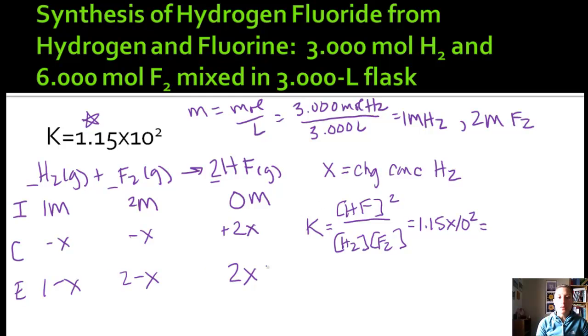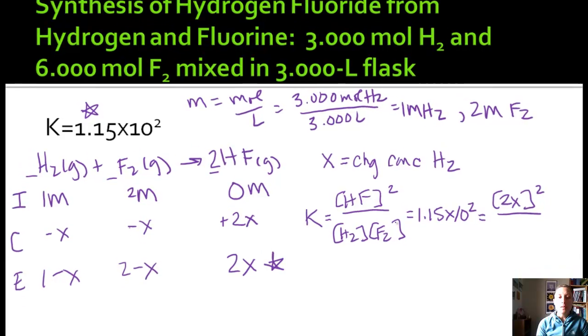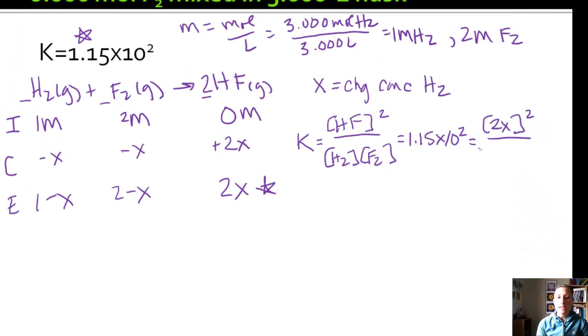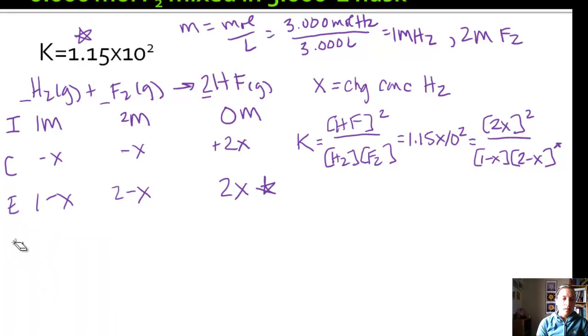And we know that that equals our 1.15 times 10 to the second. We can substitute in our equilibrium concentrations into our variables. So it's HF squared, which is 2X squared over concentration of hydrogen is 1 minus X, and concentration of fluorine is 2 minus X. All right. So now we've got to do a little bit of math. So I'm going to take my bottom part of my fraction and multiply it over to the other side. So I have 1.15 times 10 to the positive second is just 115. And I think that's going to be a lot easier to work with.